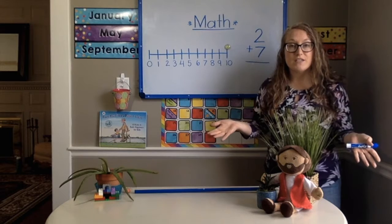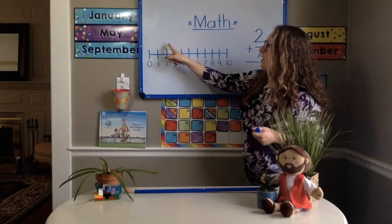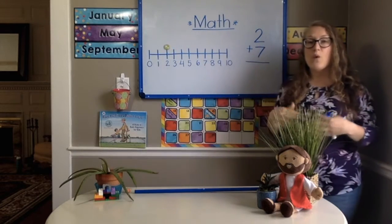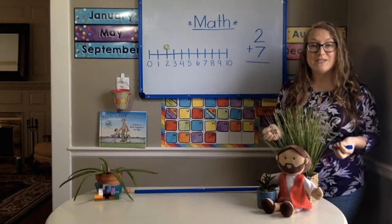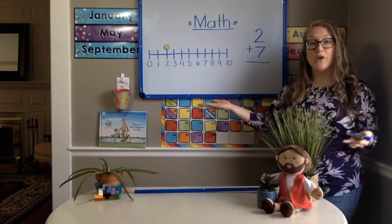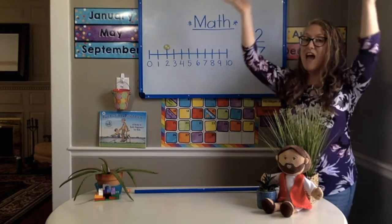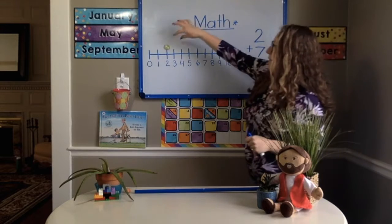So what number do I need to start on? I need to start on the number 2. That's my first number. That's where I'm going to put my magnet, my piece, whatever you have. Alright, so now how many spaces do we need to move? We move 7 spaces and we go toward the big numbers because we're adding, we're making a big number kindergarten. Alright, let's move 7 spaces. Here we go.